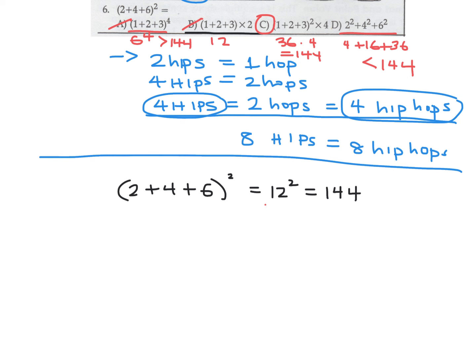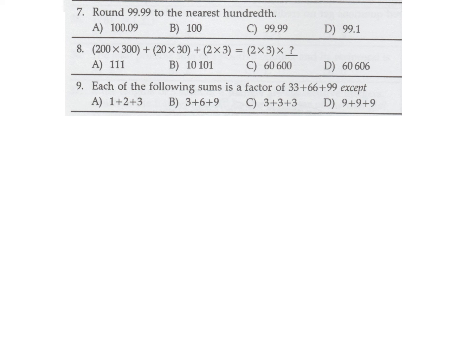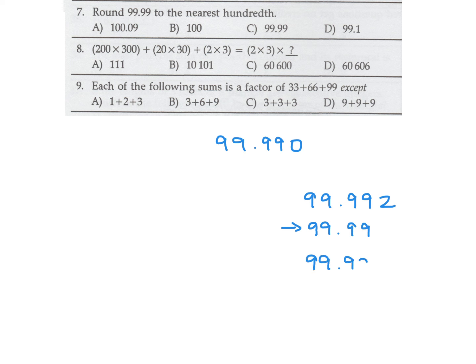Round 99.99 to the nearest hundredth. If you had 99.992 and rounded to the nearest hundredth, it would be 99.99. If you had 99.987 and rounded to the nearest hundredth, it would also round to 99.99. The number 99.99 is already 99.990, and it's already rounded to the nearest hundredth — so it might be a trick question. Regardless, the answer is C.